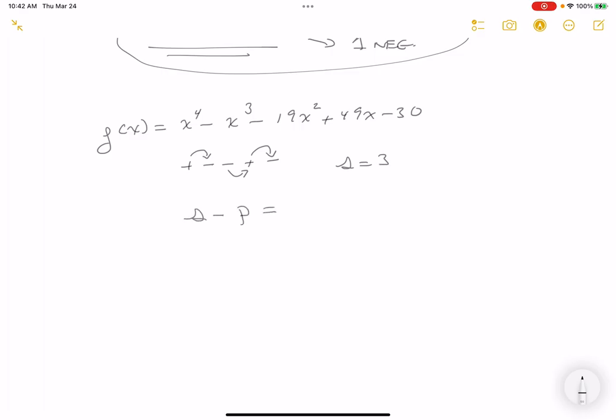And remember, this needs to equal a non-negative positive integer. So what could p be? p could be one, or p could be three.